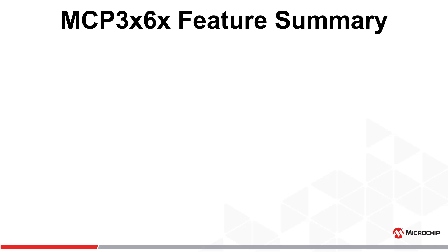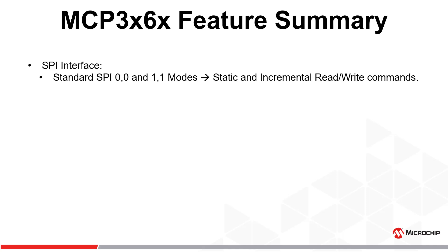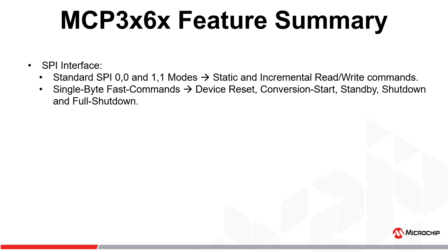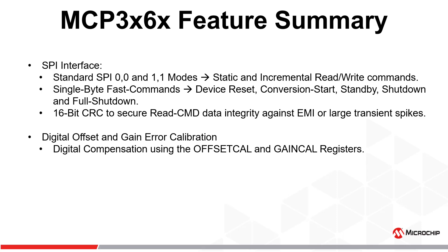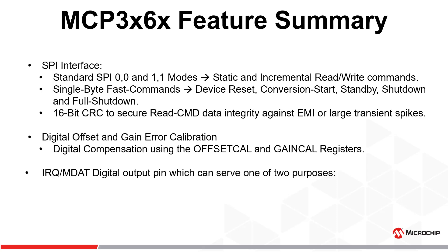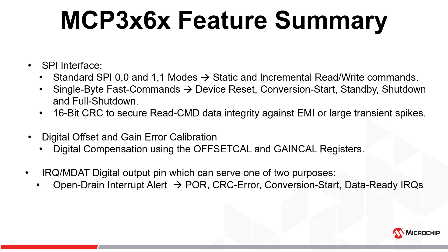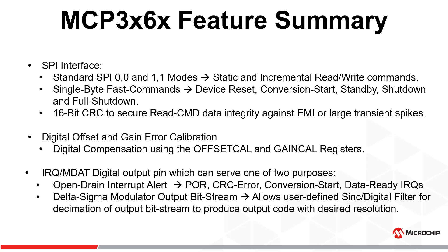Let's recap what we've covered. First, we discussed the SPI interface and the different commands available to perform read and write operations, as well as single-byte fast commands which can be used to initiate conversions, reset the device, or place it into a particular power saving mode. We also discussed the SPI communication CRC, how it is calculated, and how it can be verified for each SPI communication sequence. Then we discussed the offset and gain error of the device, and how they can be calibrated using the offset and gain CAL registers. Finally, we discussed the IRQ MDAT digital output pin, which can serve as an open drain interrupt alert or as a means of performing off-chip filtering and decimation of raw Delta Sigma modulator data to produce an output code of a desired resolution.